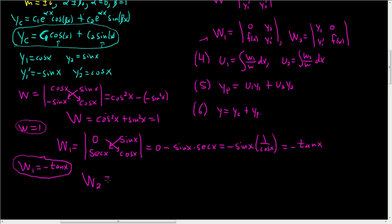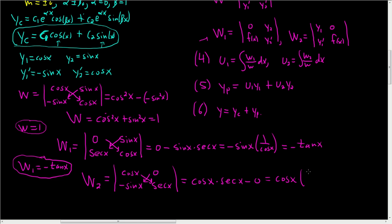For W2, keep the first column as cos(x) and negative sin(x), and replace the second column with 0 and sec(x). Computing: cos(x) times sec(x) minus 0 times negative sin(x). Since sec(x) is 1/cos(x), we get cos(x)/cos(x) equals 1. So W2 equals 1. Step 3 is done.